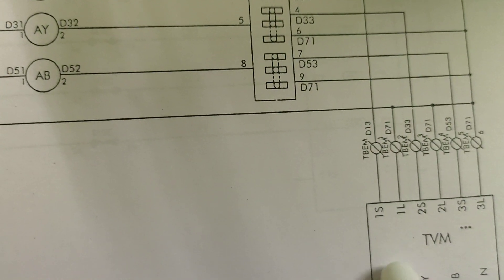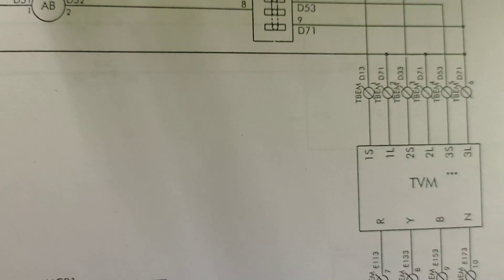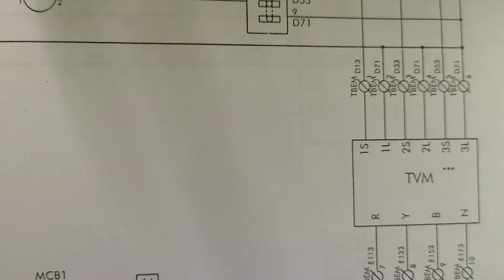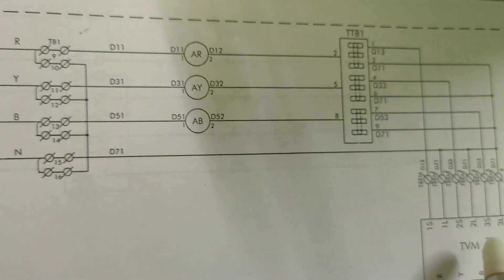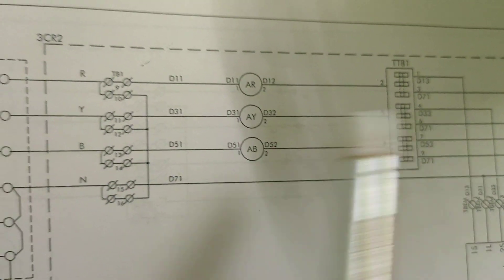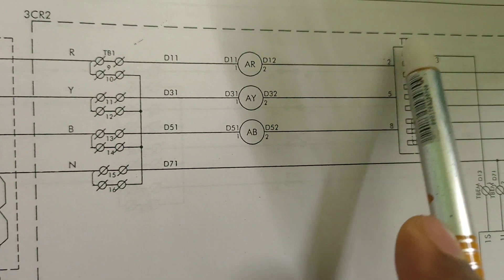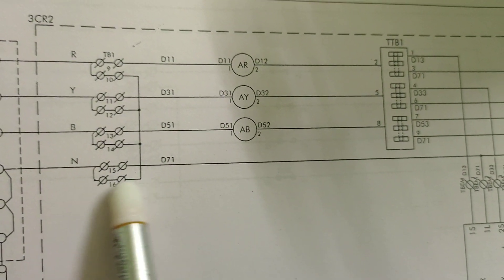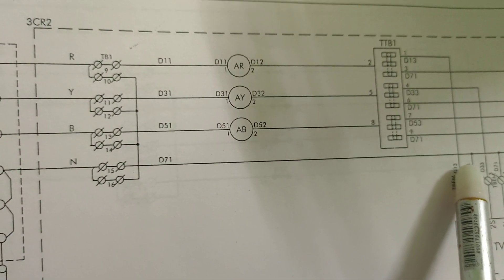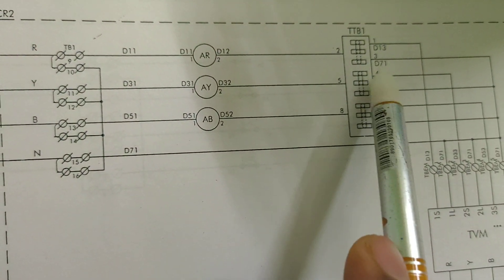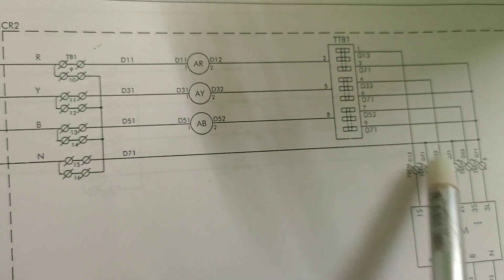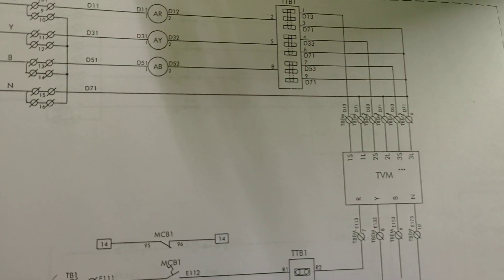These are inputted to the TVM — the tie vector meter or energy meter. The CT connections enter the energy meter for measuring current. A junction box and TTB are present, with D71 as the common or neutral point. One phase and one neutral from each TTB are connected to the TVM.